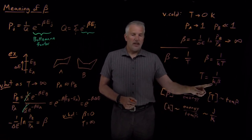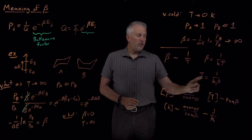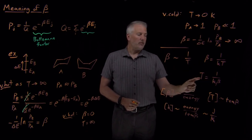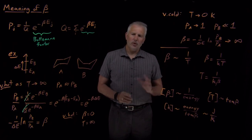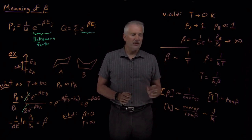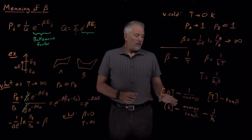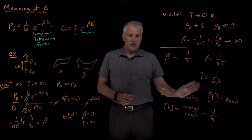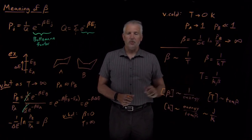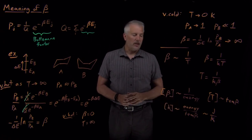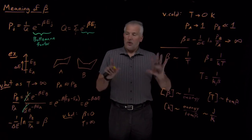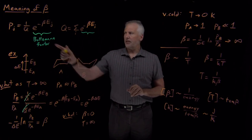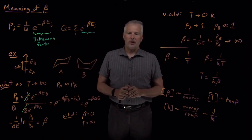Essentially, Boltzmann's constant is a conversion factor that lets us convert between the value of beta and the value of temperature, using either form of the equation. It helps convert between energy and temperature, which are related quantities but have different units. We now understand why Boltzmann's constant has the units it does. We don't yet understand why it has the exact numerical value it does — we'll see that later. With this physical understanding of beta as the inverse of temperature, we're ready to move on and do practical example calculations using the Boltzmann energy distribution.